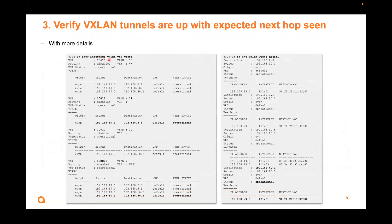For more details, you can expand 'show interface vxlan' with a question mark. One variation is 'vni plus VTEPs' — you can see the source and destination for that VNI, whether it's L2 or L3, and whether it's operational. Another variation is 'show interface vtep details', which shows the status as operational plus the next-hop IP, interface, and next-hop MAC. These different variations of the same command give you progressively more detail.